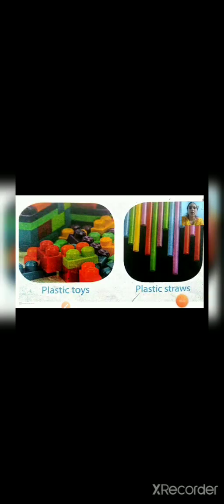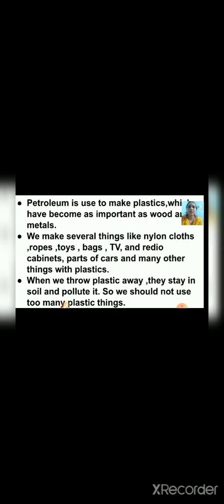Another important product we get from petroleum is plastic. Today we will discuss about plastic. You all are familiar with plastic — it has become as important as wood and metals. Most of the things used in our daily life are made of plastic. We make several things from plastic: nylon clothes, ropes, toys, bags, TV and radio cabinets, parts of cars, and many other things.